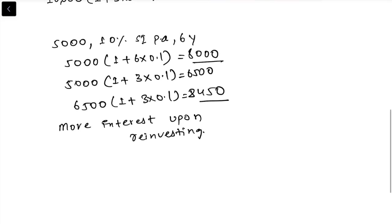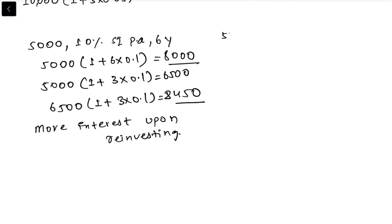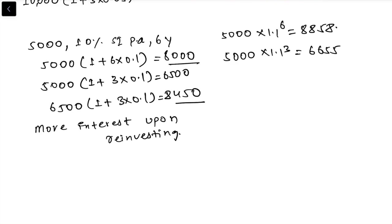Now let's look at the same example under compound interest. If you invest 5,000 at 10% for 6 years you get 8,858. If you invest for only 3 years you get 6,655, and reinvesting that for another 3 years gives 8,858 again — there is no change in the accumulated amount. The accumulated value is the same with and without reinvestment under compound interest, which is why compound interest is preferred over simple interest.